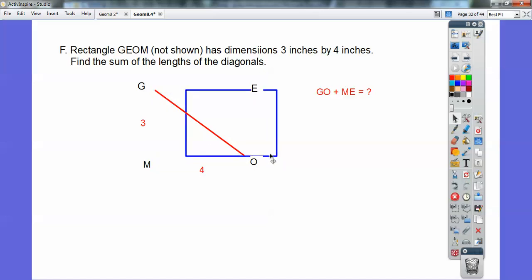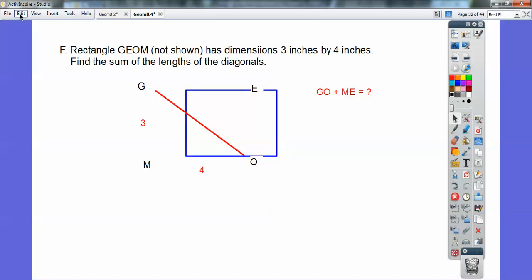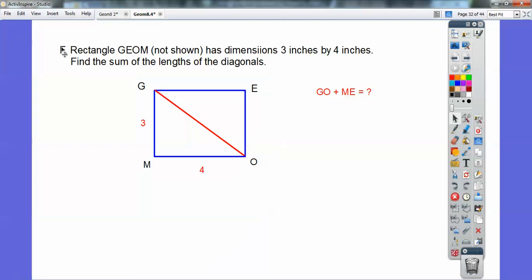Alright, so there's a right angle because it's a rectangle. And you guys should know by now your Pythagorean triples. And if you don't, I made a video on Pythagorean triples. Check that out. It really fine-tunes your skills on that. So it's a 3-4-5 right triangle. So if that guy's 5, the other diagonal is 5. So 5 plus 5 equals 10.